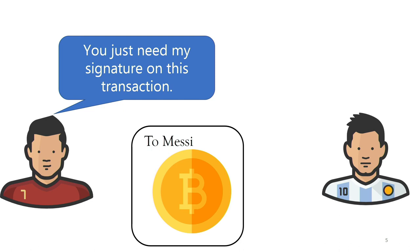Ronaldo says he can't directly give Messi the coin and the signature, because if he does, Messi could post the transaction on the blockchain irrespective of the outcome and claim all the winnings. So Ronaldo says he'll only give the transaction without the signature — he'll give the signature at the end once the outcome is known.